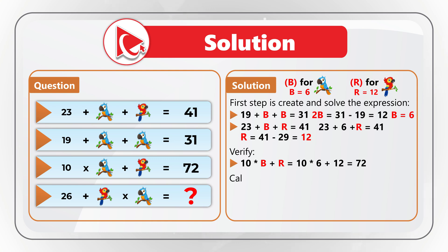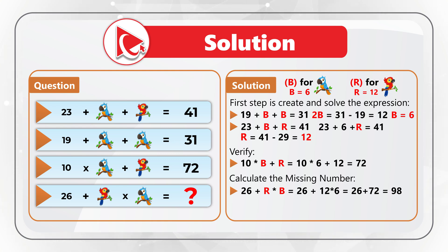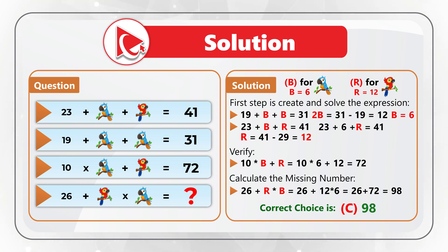Now we calculate the missing number: 26 + red parrot × blue parrot = 26 + 12 × 6 = 26 + 72 = 98. The correct answer is choice C: 98. Hopefully you've nailed this question and now know how to solve similar problems on the test.